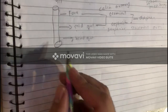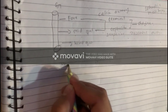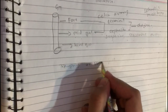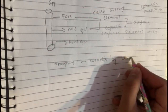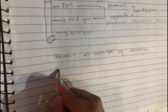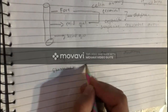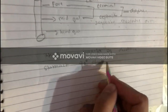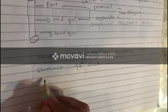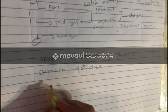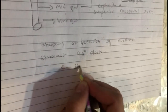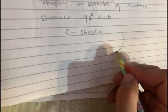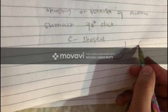Next, we will discuss the shaping and rotation of the duodenum. As we know, the stomach rotates 90 degrees clockwise, and with this, the duodenum also rotates and starts to change into a C-shape.